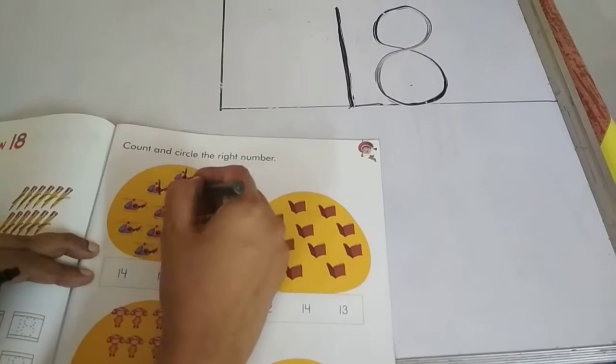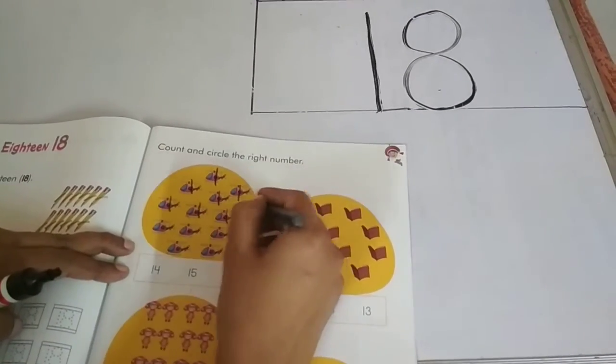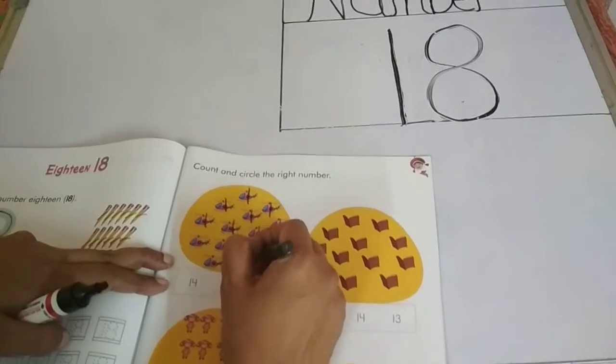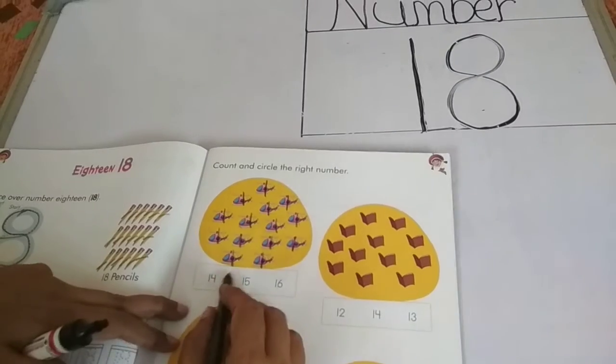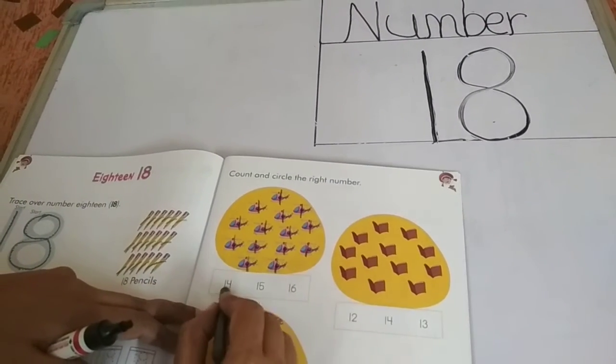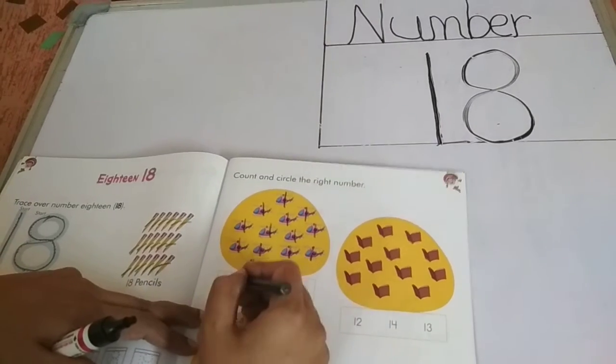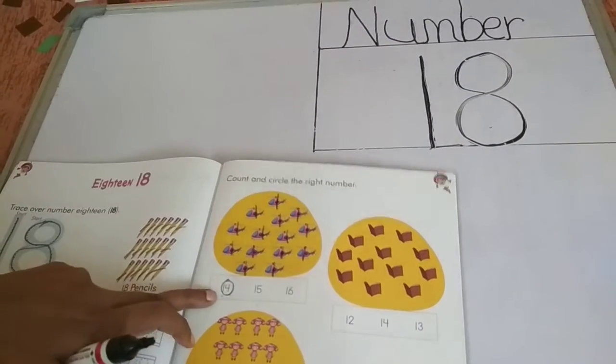1, 2, 3, 4, 5, 6, 7, 8, 9, 10, 11, 12, 13, 14. Number 14. Where is number 14 in this? 1, 4, 14. So you have to circle the correct number. 1, 4, 14.